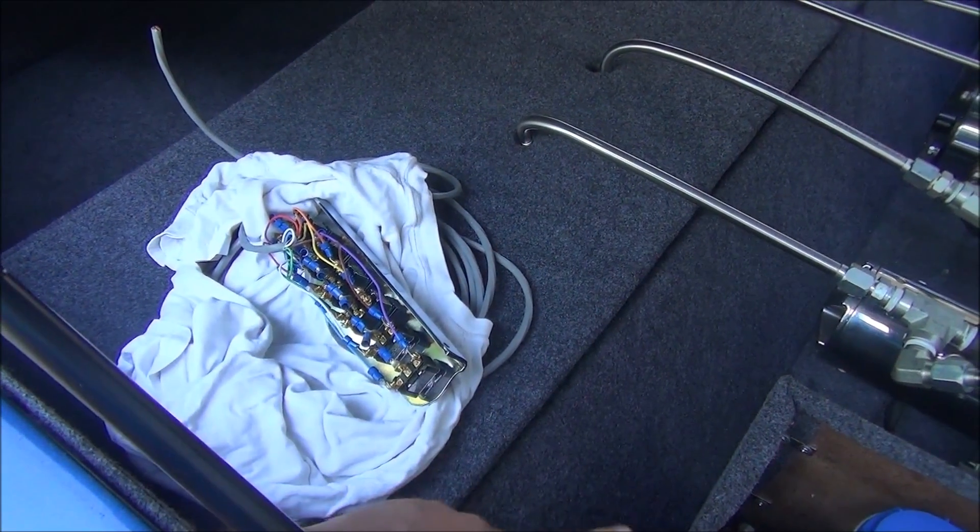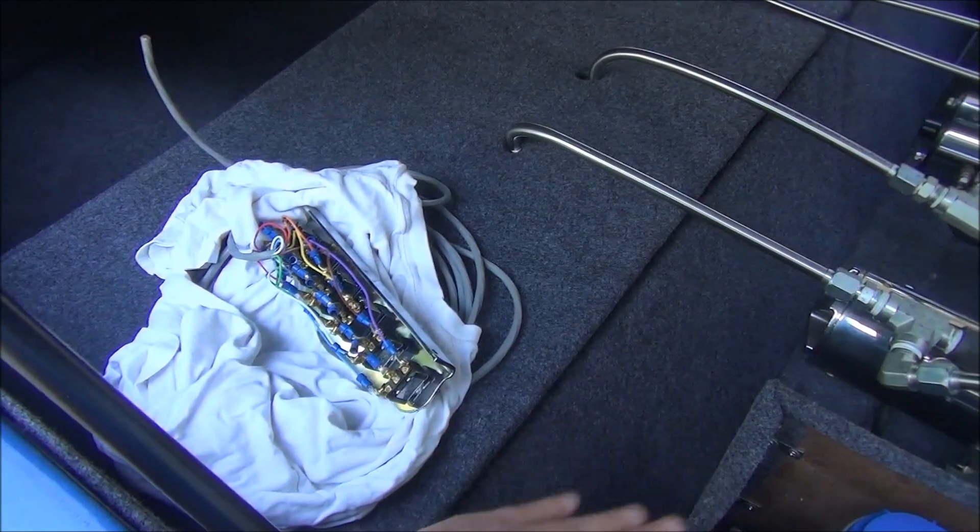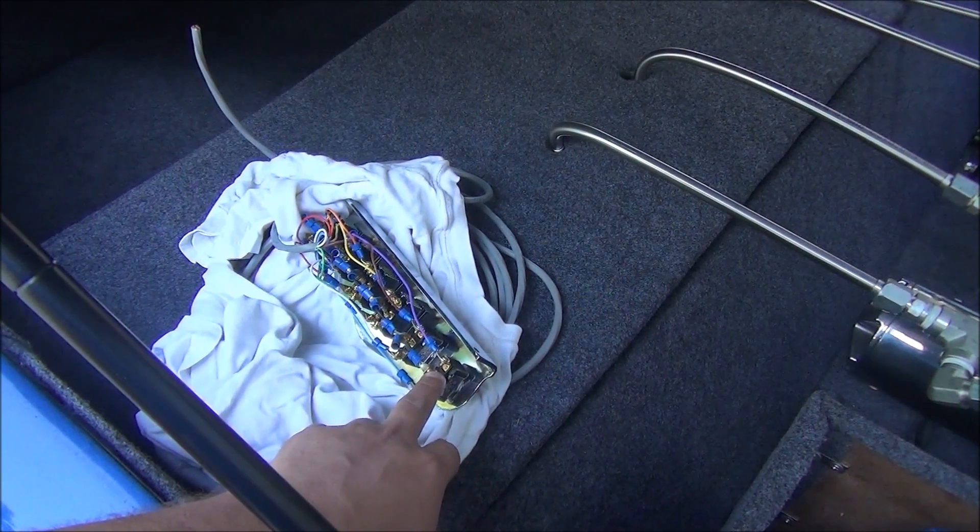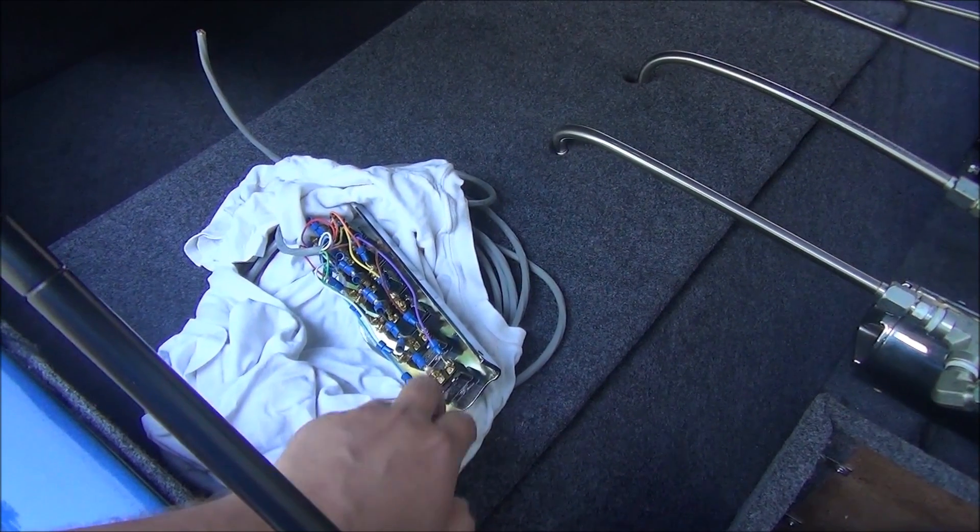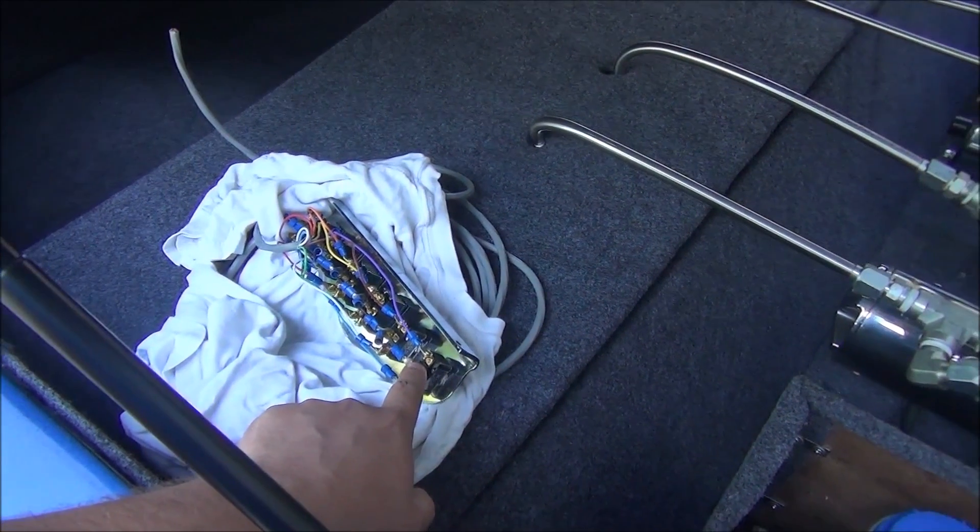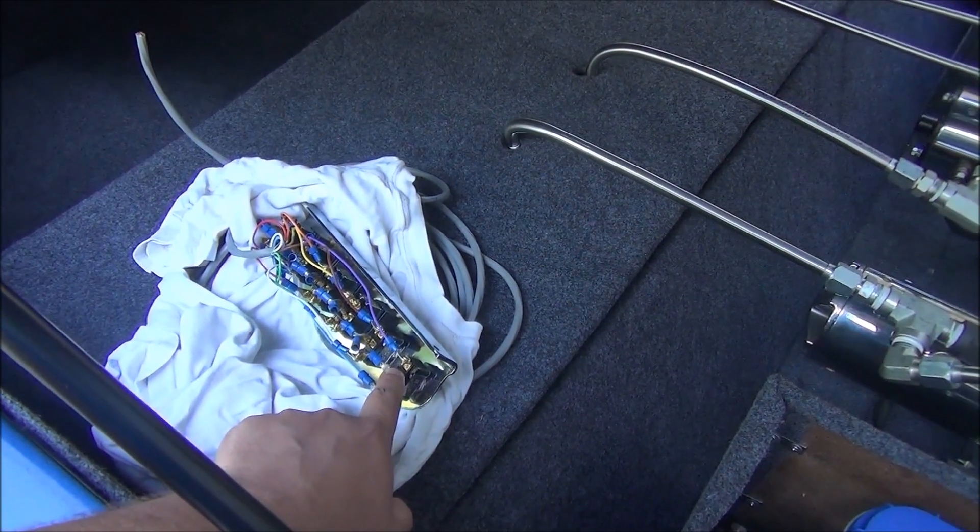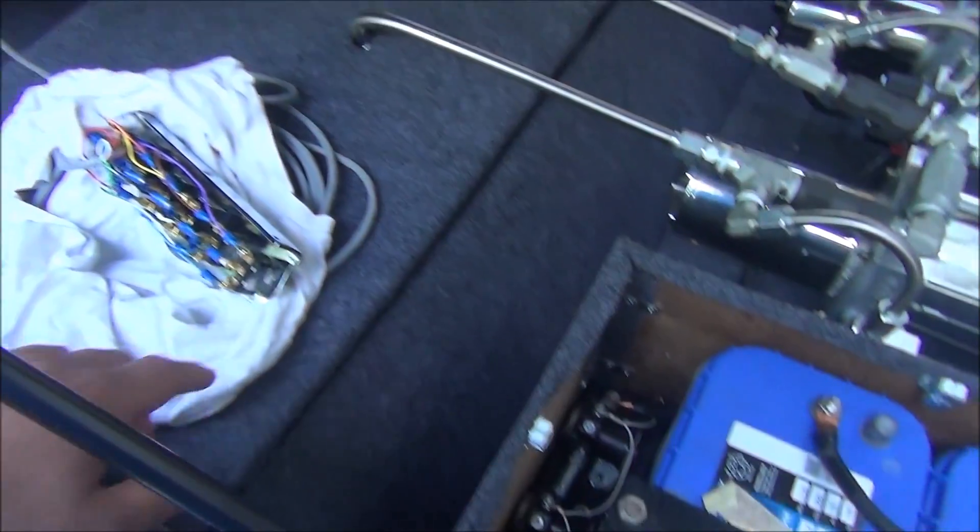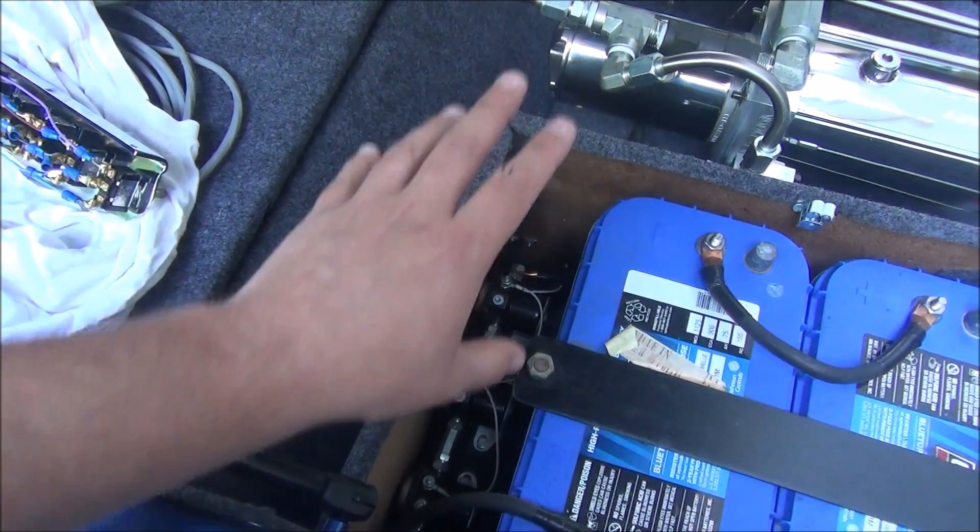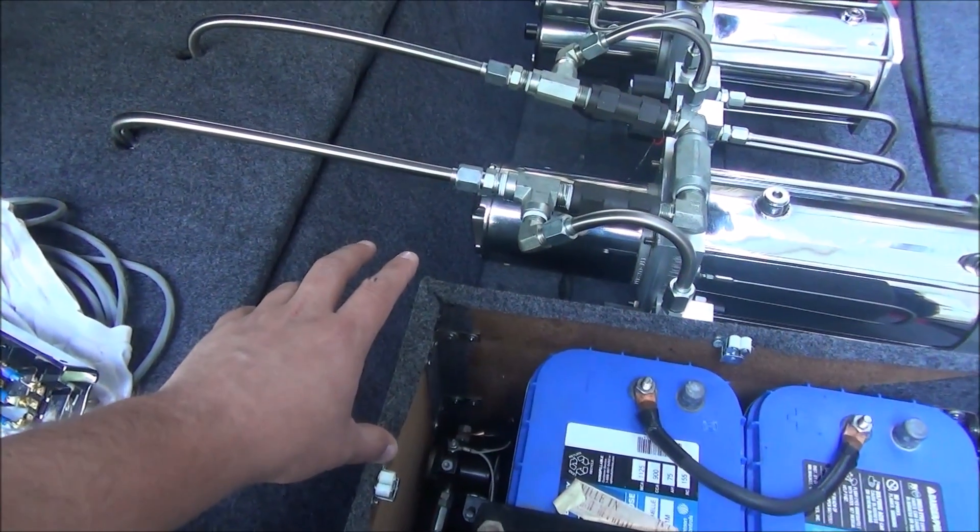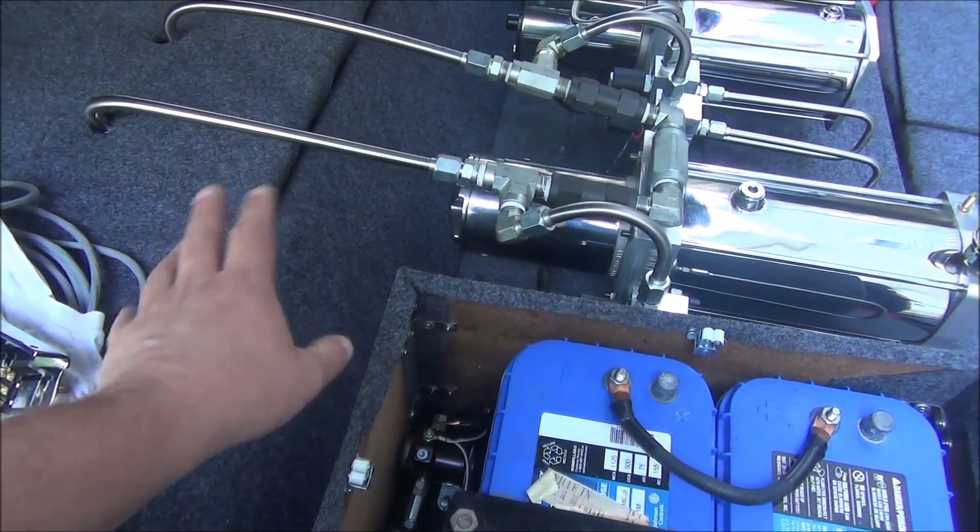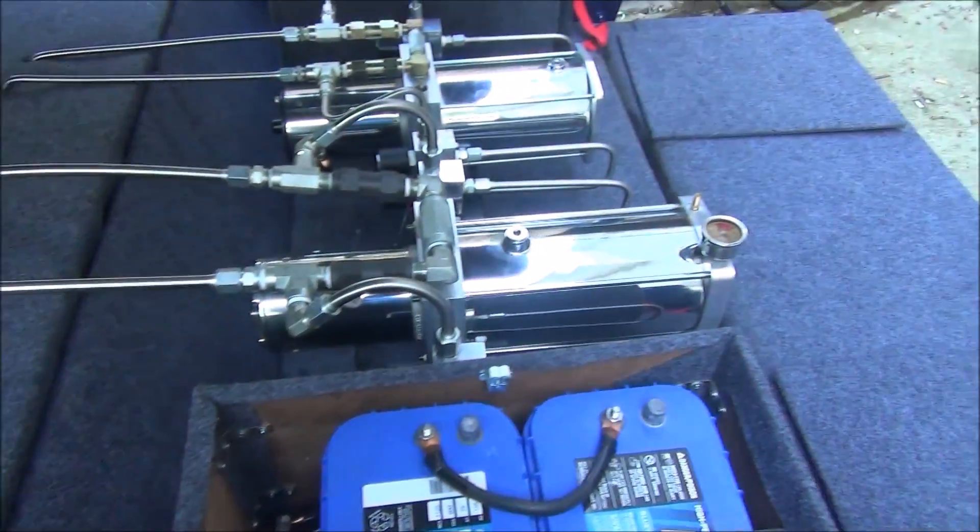So when you hit the switch, power travels, or excuse me, power is already traveling to the switch to the center. As soon as you hit that switch, it completes the circuit from there to whichever side that you hit, which then comes back to the solenoids or the dumps. If you're hitting it up, it comes to the solenoids and then the solenoids complete the circuit and let the motor turn and that lifts it. Same thing for when you hit the dump, only difference is the motor's not turning.